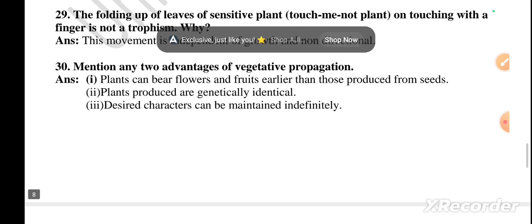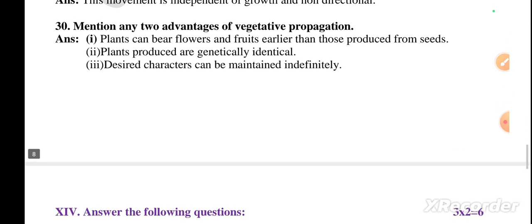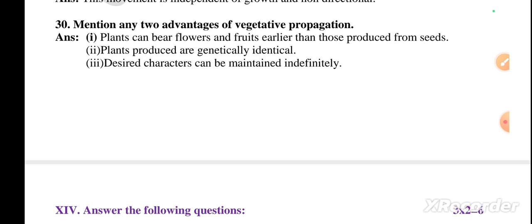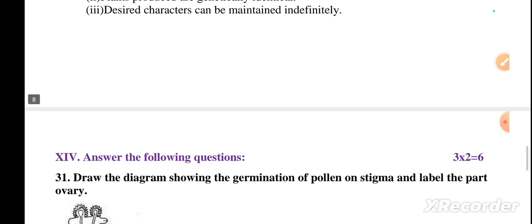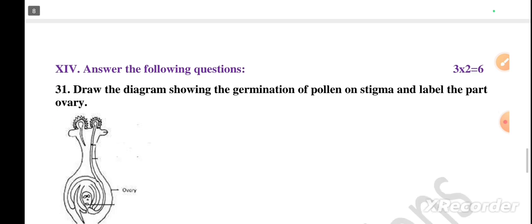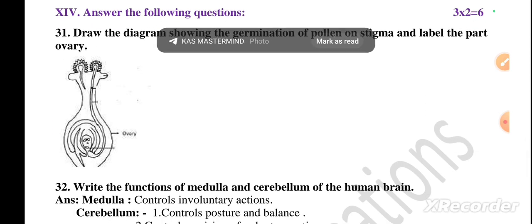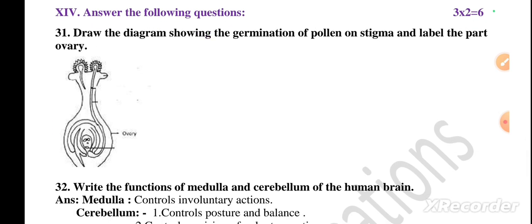Question number 30: mention any two advantages of vegetative propagation. Plants can bear flowers and fruits earlier than those produced from seeds. Plants produced are genetically identical; desired characters can be maintained indefinitely. Any two points written will get you one mark.